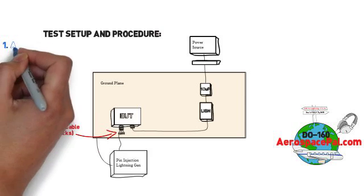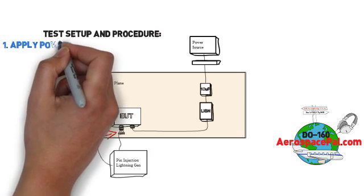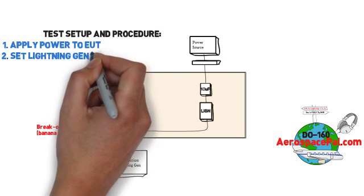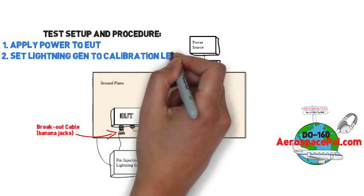You'll apply power to the EUT if your EUT is more than just a passive device. The generator will be set up in the method used during calibration and to the calibration test level.